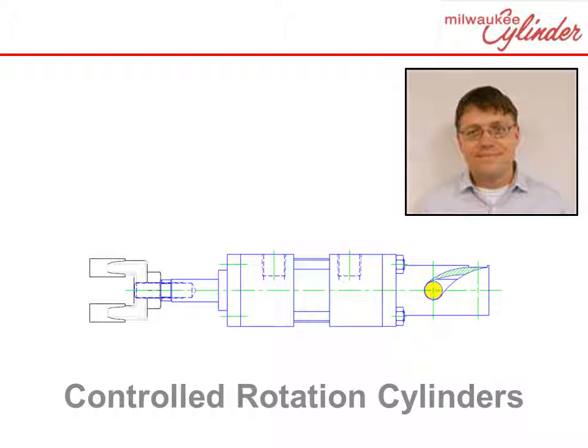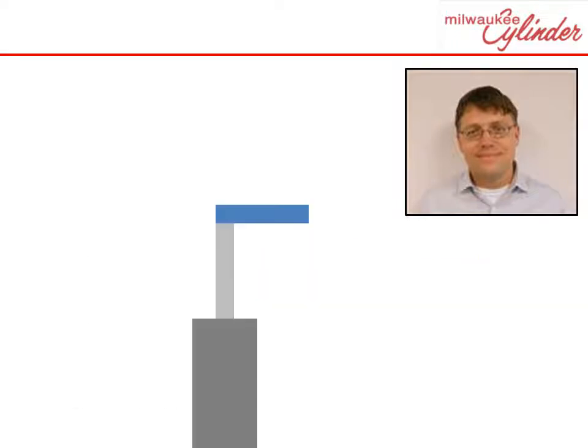What if you need a cylinder that has to have a precise rotation? For example, you may want to use a cylinder with a clamp arm that rotates into place to clamp down a part for machining.